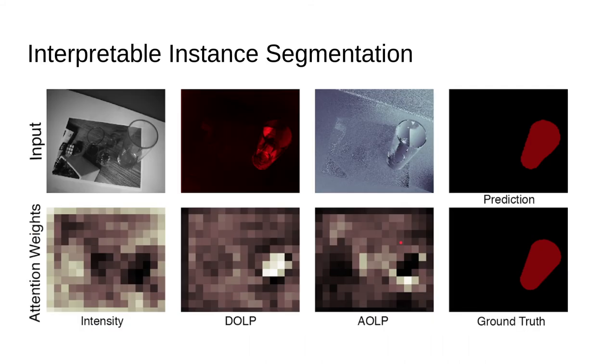Furthermore we do interpretable instance segmentation. So here we visualize the attention weights on the bottom and that shows that the DOLP and AOLP are actually the most heavily weighted when it comes to the prediction of the cup creating robustness to printout spoofs.